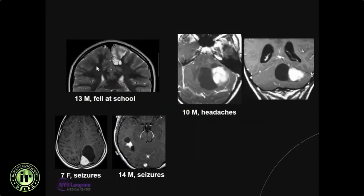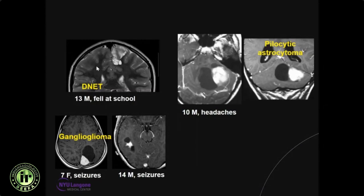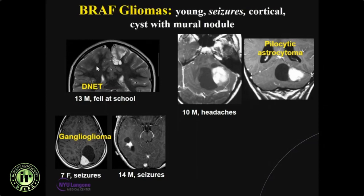The last category: majority are WHO grade 1 tumors occurring in younger patients and children, usually incidentally found or presenting with seizures. Four different cases show that majority either have cysts or cysts with a mural enhancing nodule. These are categorized as WHO grade 1 tumors. Majority of pilocytic astrocytomas and gangliogliomas have this BRAF mutation. It's important to identify this because majority of these tumors do really well and long-term survival after complete resection is fairly good.